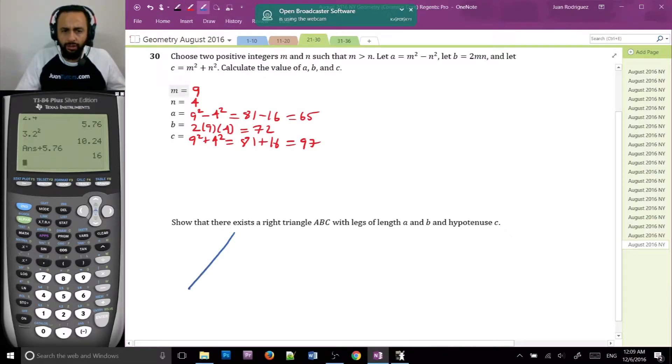So now, what does it mean, though? It's a right triangle. There's my right triangle. With legs of length A and B, A, B, and hypotenuse C. So I'm going to call this angle C. We'll call this angle A and this angle B. So A is 65. B is 72. And then C is equal to 97.